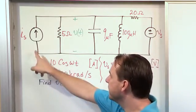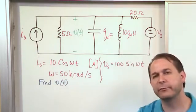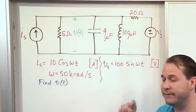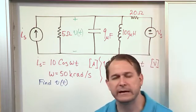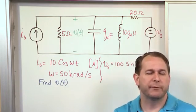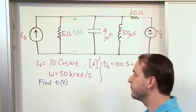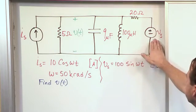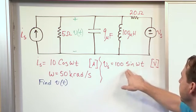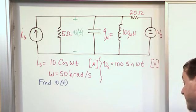And in this case, the problem tells us the value of the source here, but not in terms of a phasor. We know that it's 10 times the cosine of omega t and that's in amps. And we're also given the frequency. So we're given more raw information rather than just being given the phasor in this problem. And we also know similar information about this voltage source here. We know it's 100 times sine of omega t and it's the same frequency. Omega is the same in each case.